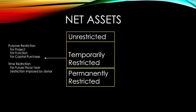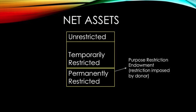Temporarily restricted net assets have some imposed restrictions — they are either for a specific proposed project, a specific function, or a capital function, and must meet a specific purpose either within a specific time frame or for a specific cause. Permanently restricted net assets are often restrictions imposed by the donor. For example, an endowment is where a purpose restriction could be in place, where a specific scholarship is only available for a specific group, cause, or place.